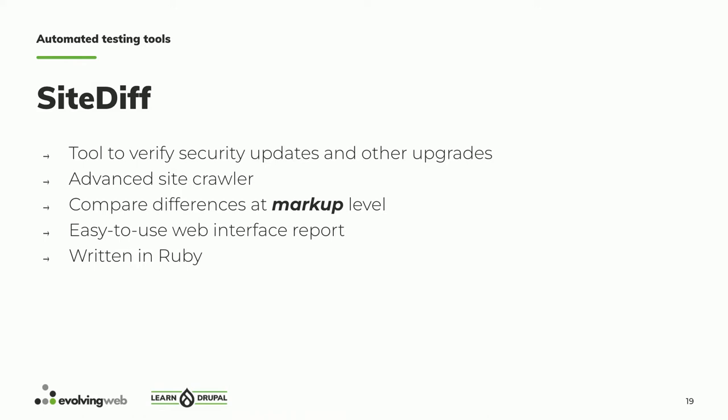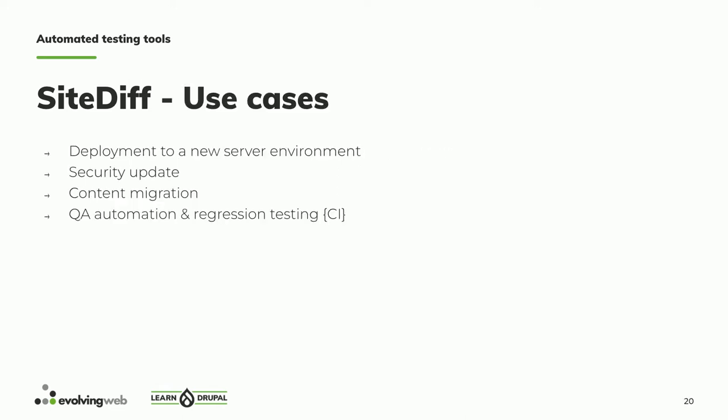SiteDiff does the crawl, the diff, and generates a nice report. We wrote it as a crawler in Ruby. The typical use cases are deploying from dev to staging or staging to production — nominally everything should be the same, but maybe a different version of PHP breaks some custom module that you wouldn't catch unless you crawl every page. Similarly for security updates: you crawl the site, take a snapshot, run the security update in place, rerun the crawl, and compare before and after.